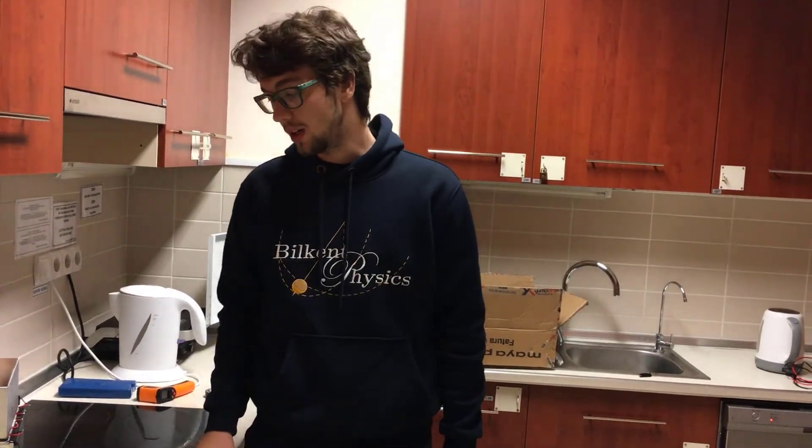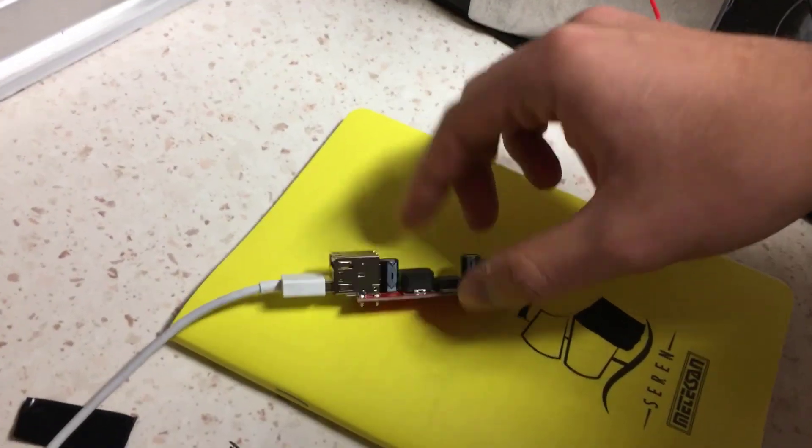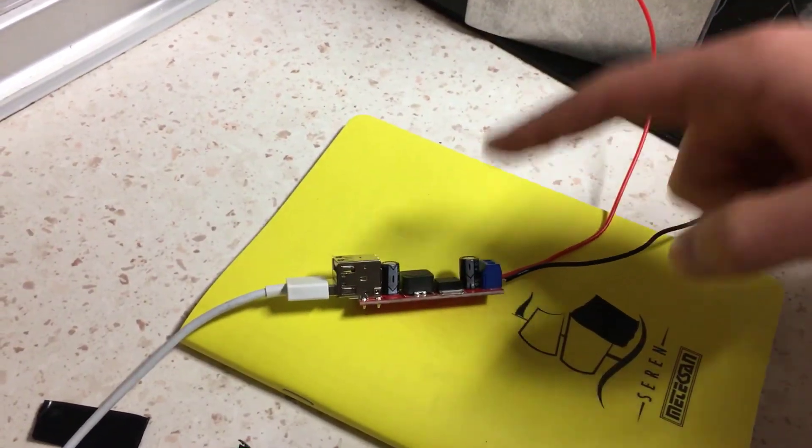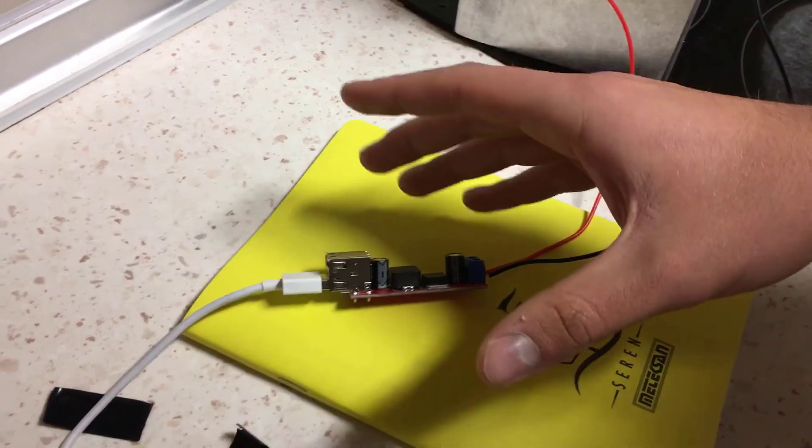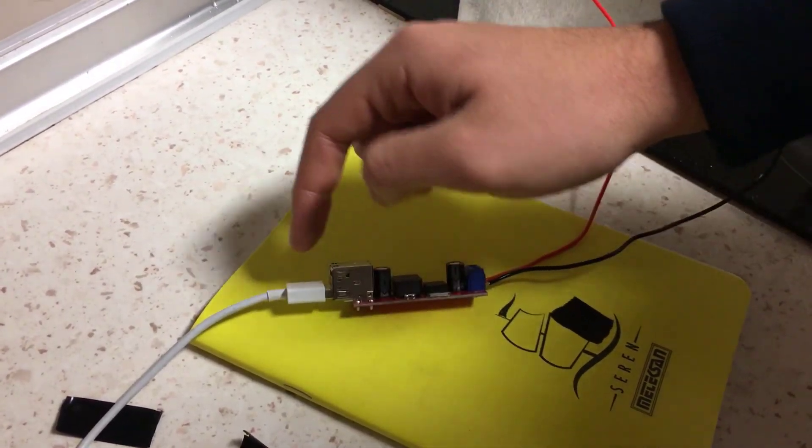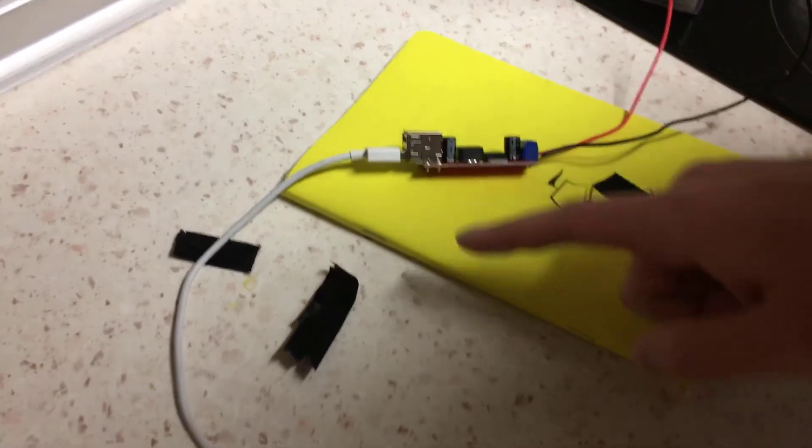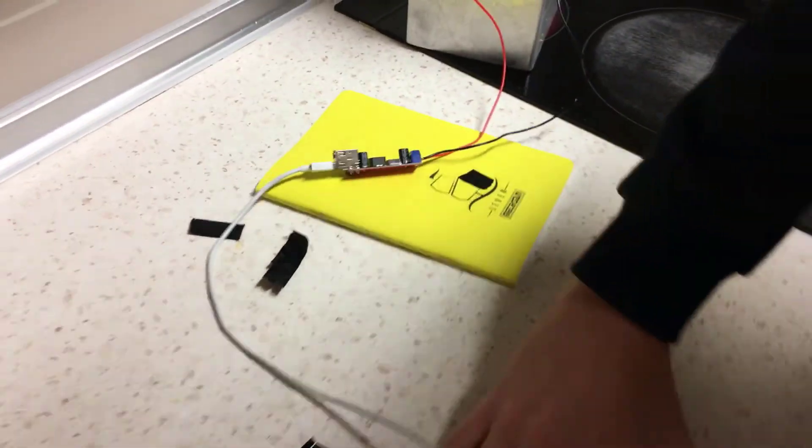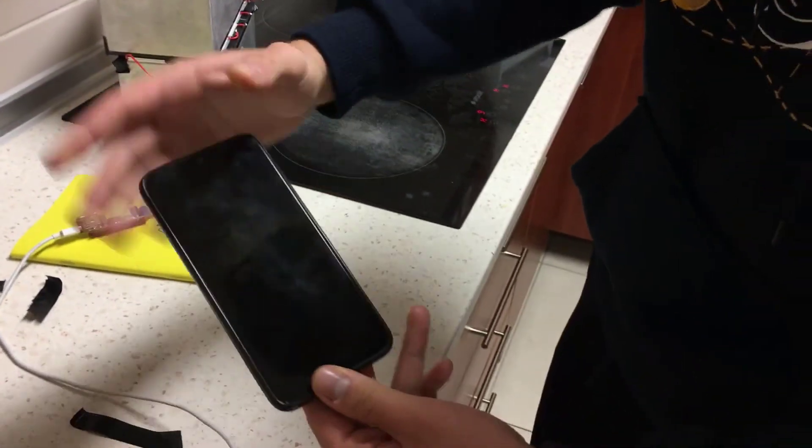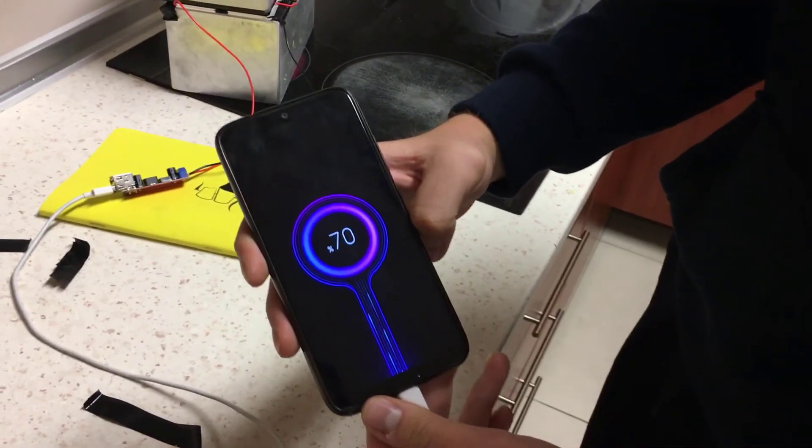And in the second part of our experiment, we do what we actually wanted. We connect these wires into our voltage regulator, which regulates the voltage we get from the system to five volts all the time. And then we connect the USB charger of our phone into this regulator, and after we connect the USB to our phone, we see that it's getting charged.